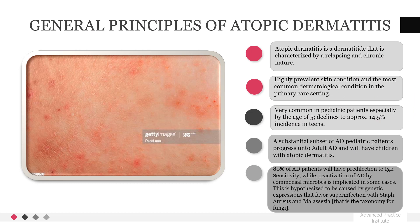General principles of atopic dermatitis. Atopic dermatitis is a dermatitis characterized by a relapsing and chronic nature. It is a highly prevalent skin condition and the most common dermatological condition in the primary care setting. It is very common in pediatric patients, especially by the age of 5, and declines to approximately 14.5% incidence in teens. A substantial subset of 80% of pediatric patients progress onto adult AD and will have children with atopic dermatitis. 80% of AD patients will have a predilection to IgE sensitivity, while reactivation of AD by commensal microbes is implicated in some cases.